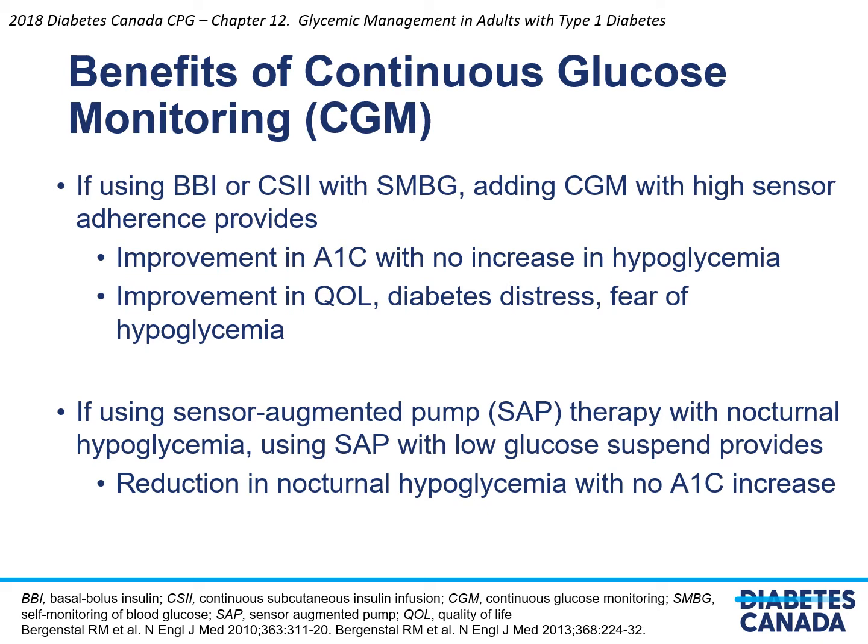Benefits of continuous glucose monitoring: if using basal bolus injection therapy or insulin pump therapy with SMBG, adding CGM with high sensor adherence provides an improvement in A1C with no increase in hypoglycemia, and an improvement in quality of life, diabetes distress, and fear of hypoglycemia. If already using sensor-augmented pump therapy and nocturnal hypoglycemia persists, using SAP with low glucose suspend feature provides a reduction in nocturnal hypoglycemia with no increase in A1C.